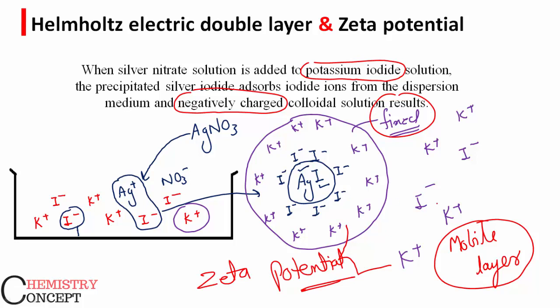Again I repeat, these two layers—fixed layer and mobile layer—are called Helmholtz electrical double layers, and the potential difference between these two layers is called zeta potential.